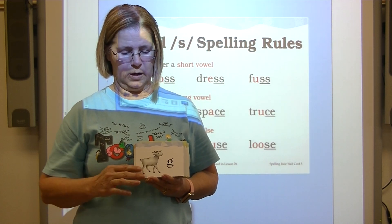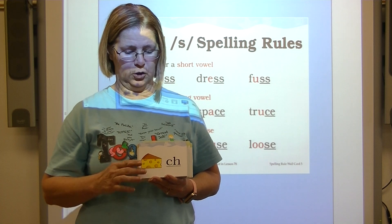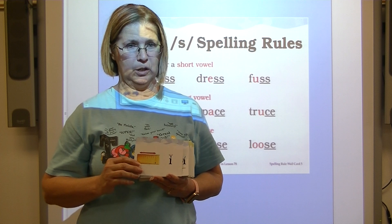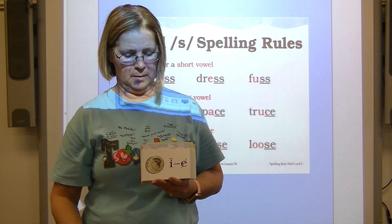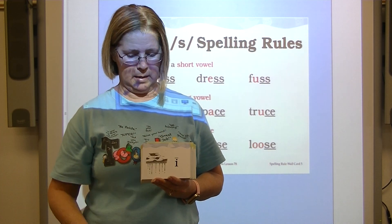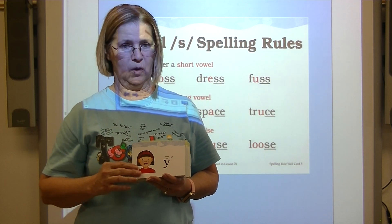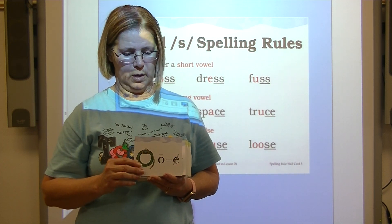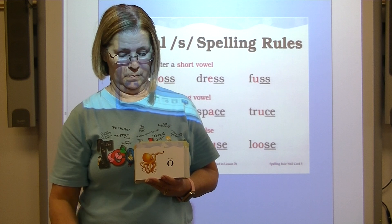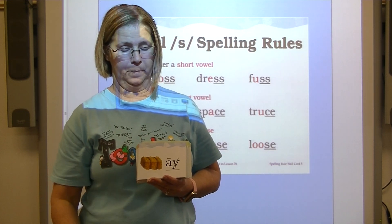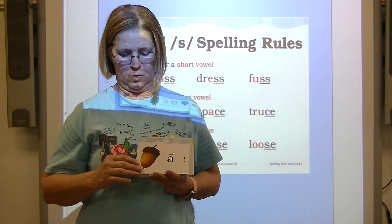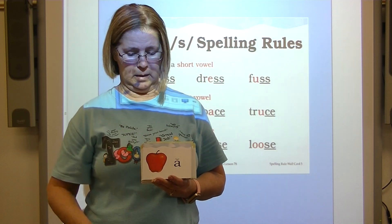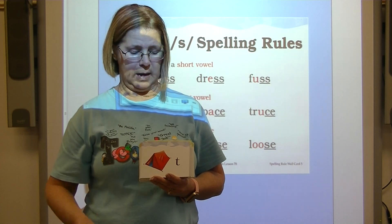Rabbit — R; goat — G; cheese — CH; hat — H; inch — short I; light — long I; dime — long I; icicle — long I; cry — I; overalls — short O; hose — long O; bow — long O; octopus — short O; hay — A; acorn — long A; cake — long A; rain — long A; apple — short A.